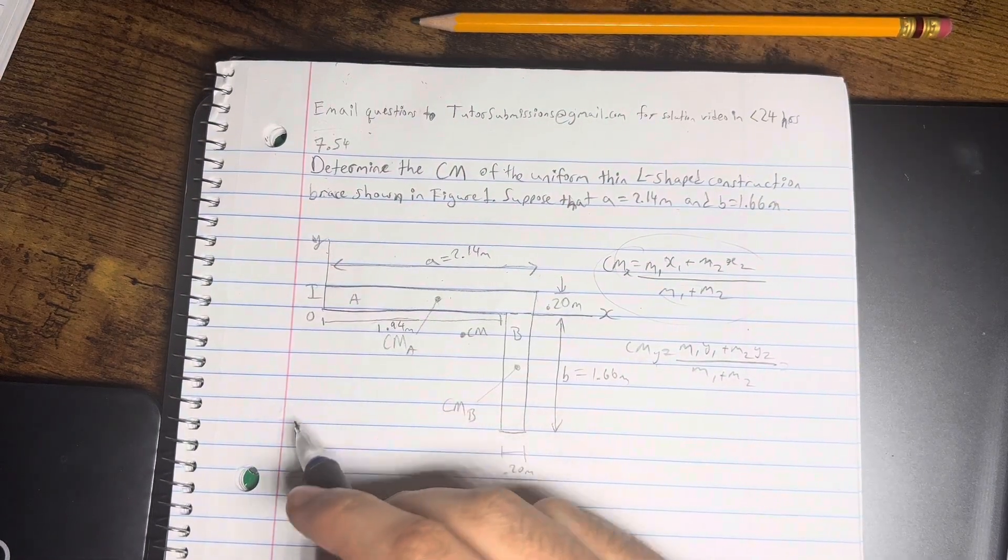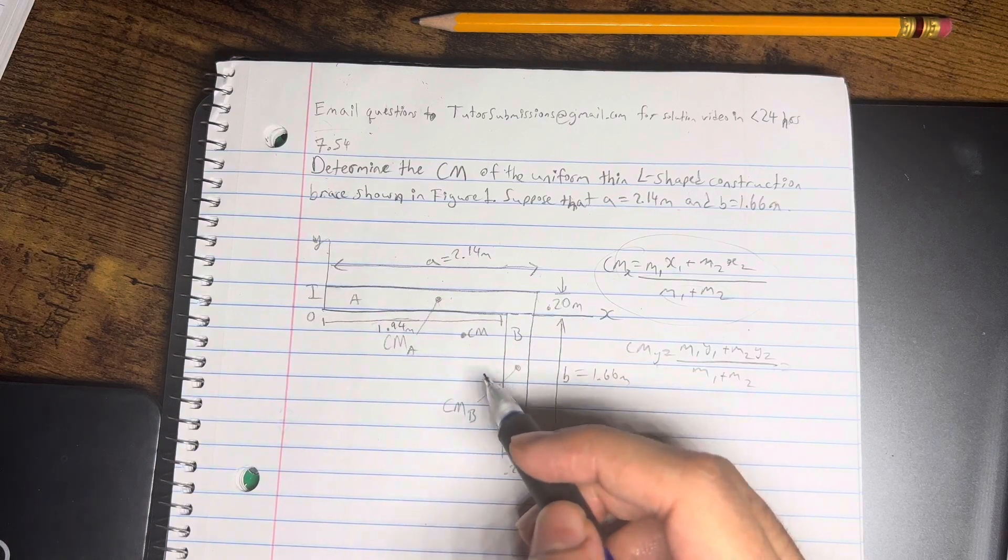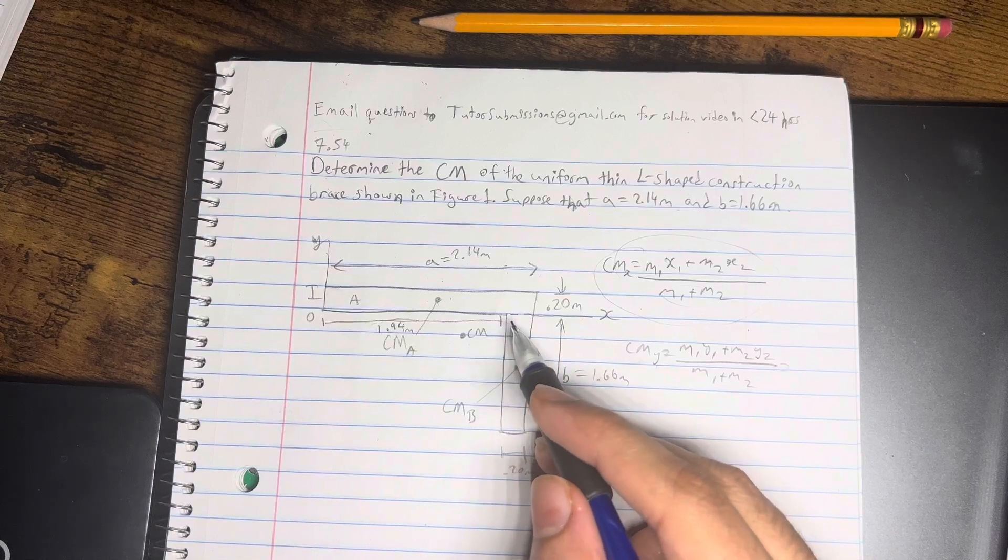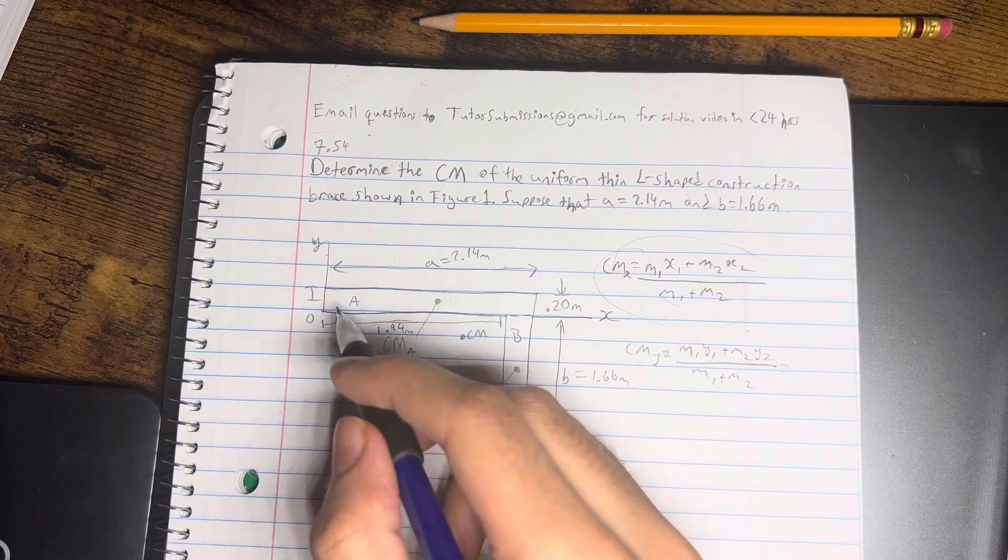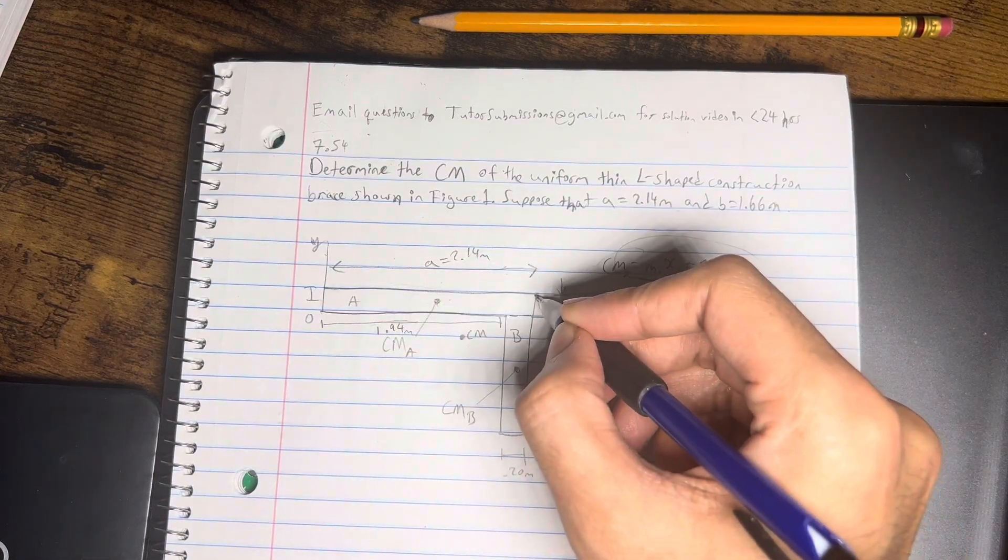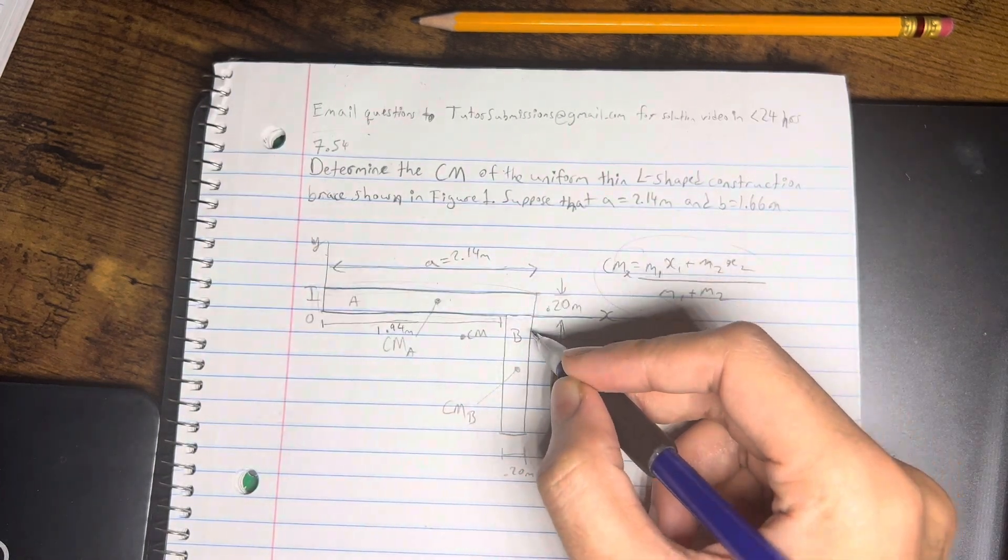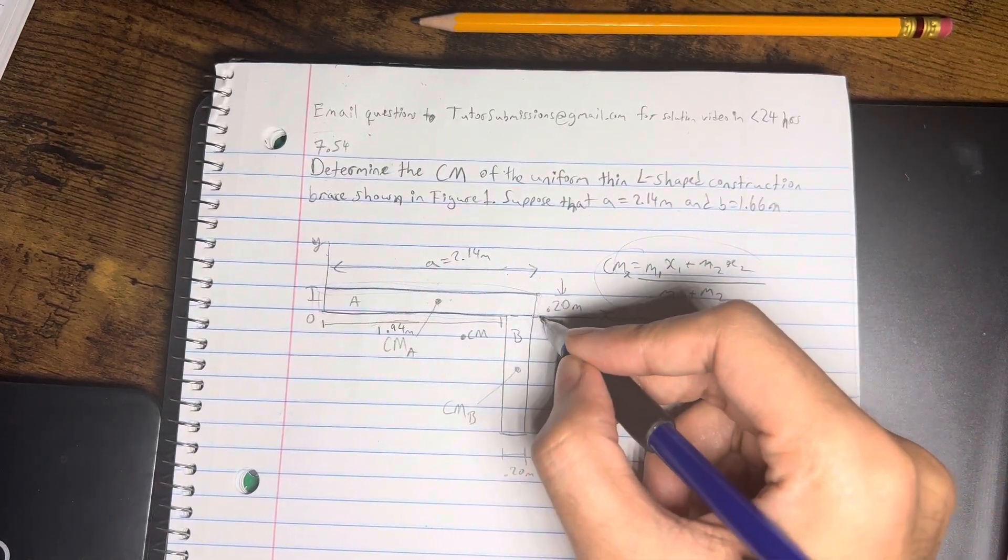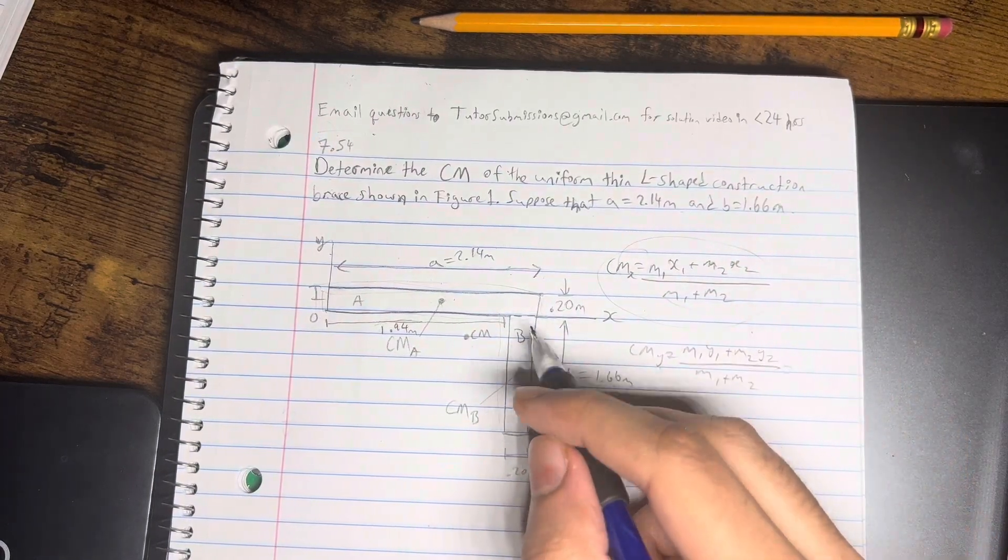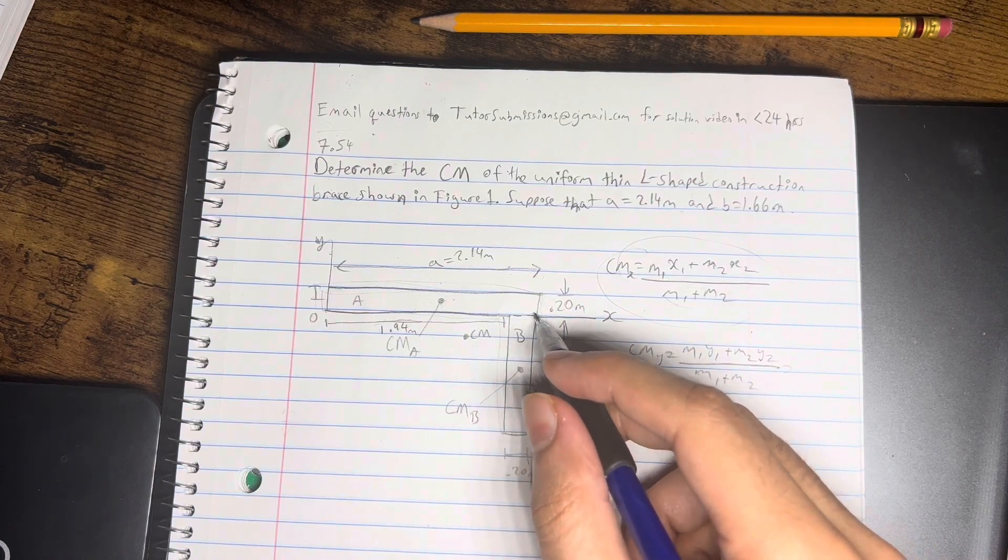So really quickly before I get into that, the way we're going to tackle this problem is by dividing this L-shaped brace into two separate entities. So the first being this A sort of rectangle here, we're going to take this entire rectangle here. And then for the second one, or B, we're going to take this rectangle over here. So that's how we're going to section off these respective rectangles.